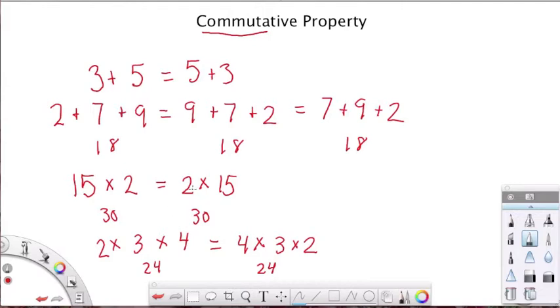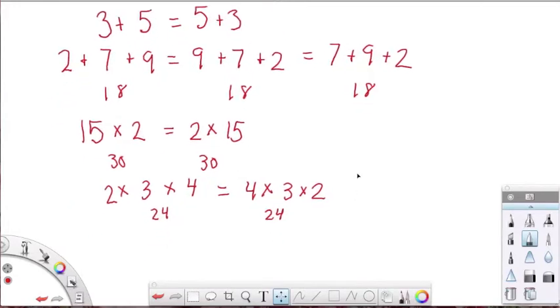Now why do you think this is true? Well, let's think about the relationship between multiplication and addition. Multiplication is just repeated addition. So you're really doing the same operation, just you're doing it multiple times. So the commutative property is true for addition and multiplication, but let's take a look at what it's not true for.